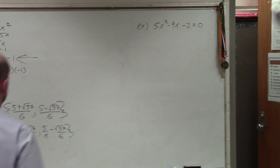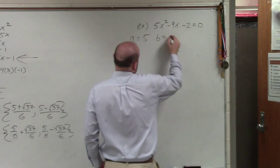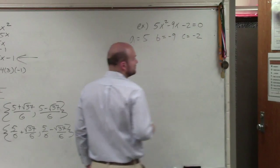All right, so in this one, we know that my a is 5, b is negative 9, c is negative 2. Right?